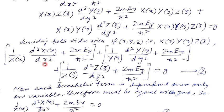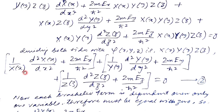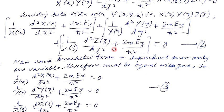If we divide both sides by the wave function psi(x,y,z) — that is, by X·Y·Z — we get: (1/X)(d²X/dx²) + (2mEx/h-cross²) + (1/Y)(d²Y/dy²) + (2mEy/h-cross²) + (1/Z)(d²Z/dz²) + (2mEz/h-cross²) = 0. Each bracketed term is dependent only on x, y, or z respectively, and since they are independent variables, each bracketed term must individually equal zero.